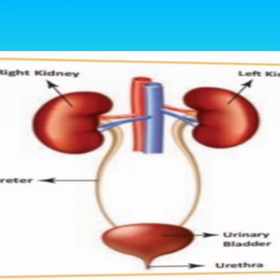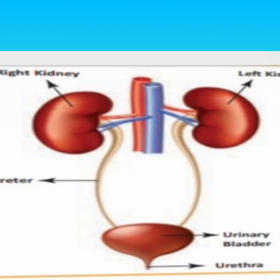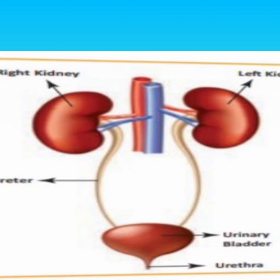Urine entering the urinary bladder from the ureter slowly fills the hollow space inside the bladder. Urine is excreted from the body through the urethra. These are the functions of the excretory system.